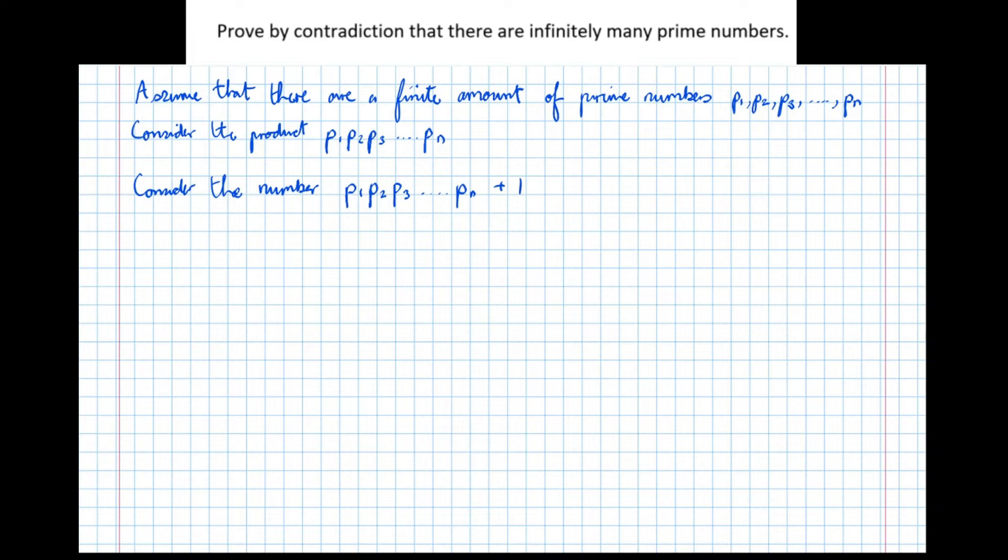Now this point here is quite important. We know from GCSE maths that we can find the prime number decomposition of any number, i.e. any number can be uniquely expressed as the product of primes.